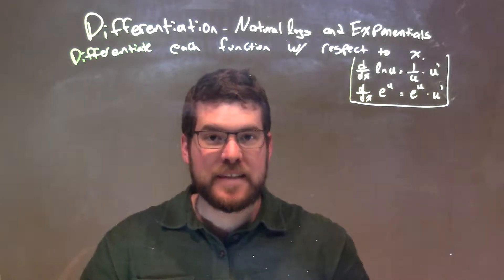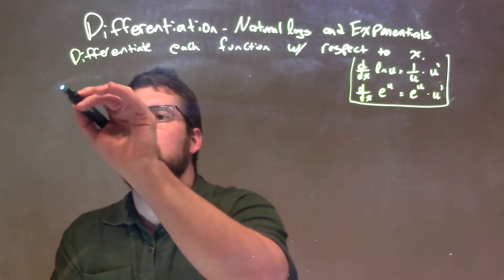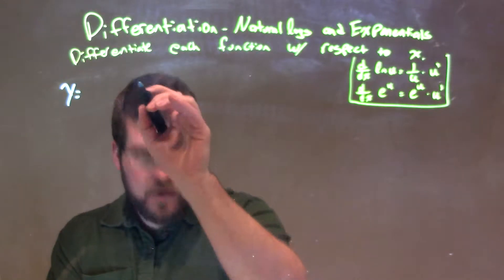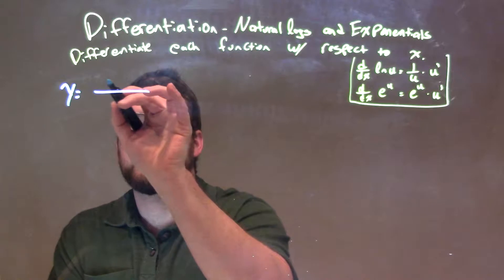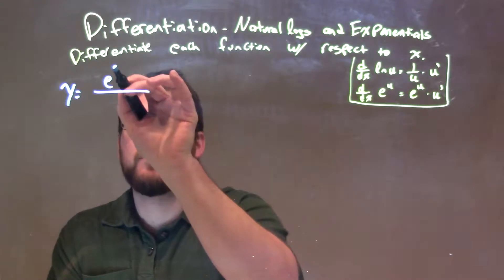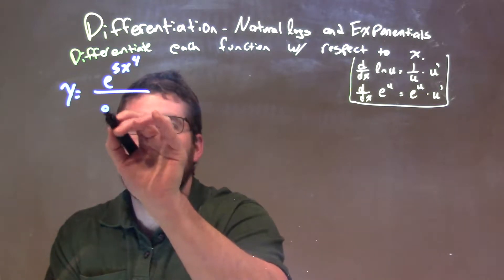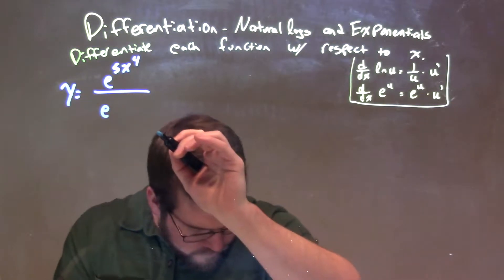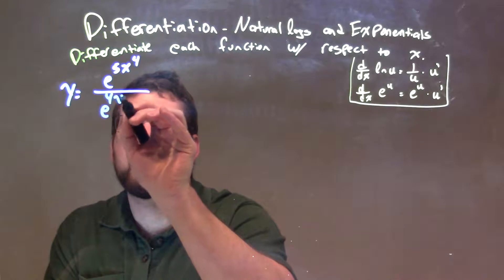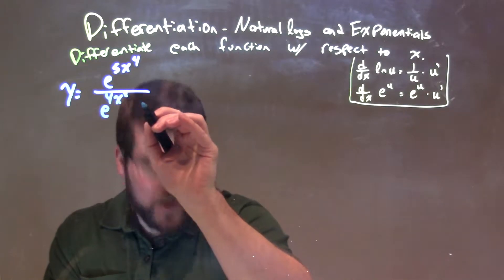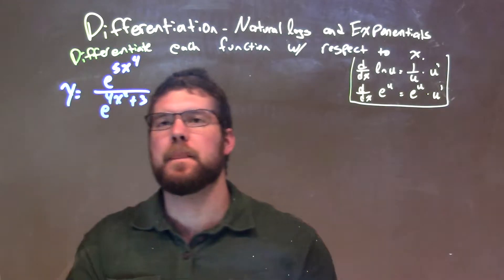So if I was given this function, y equals the fraction e to the 5x to the 4th power over e to the 4x squared plus 3 power.